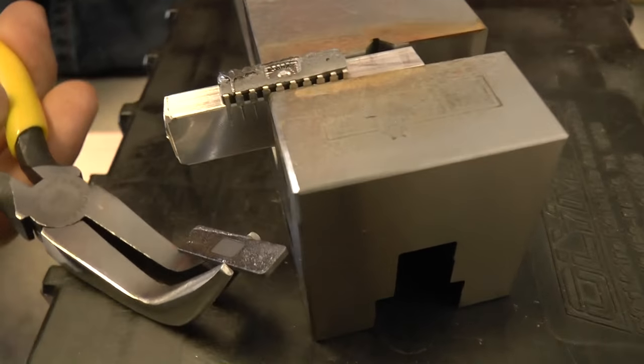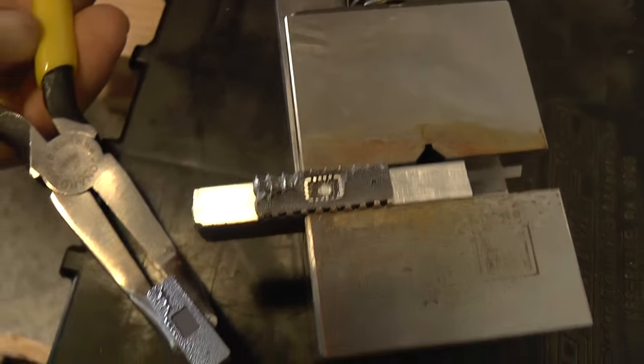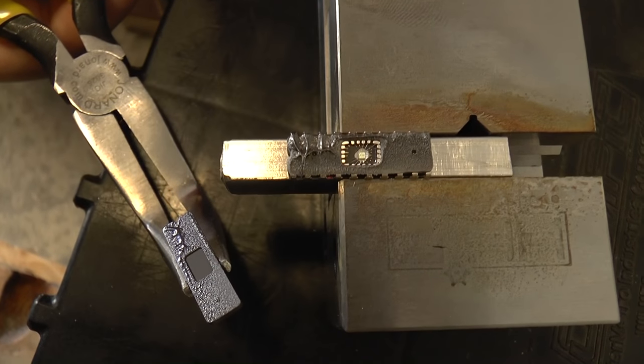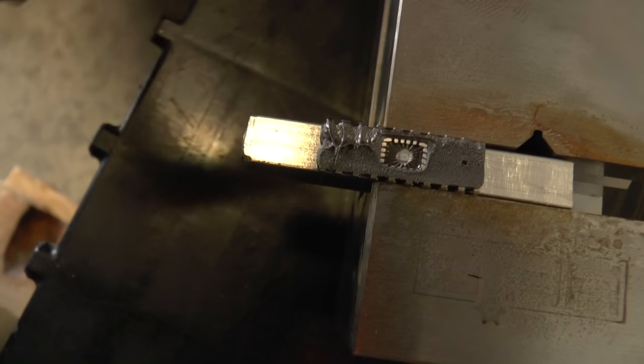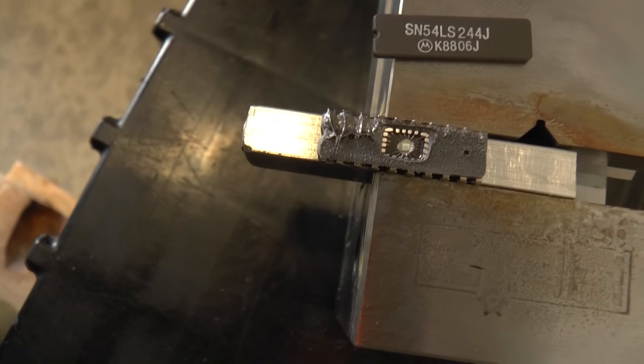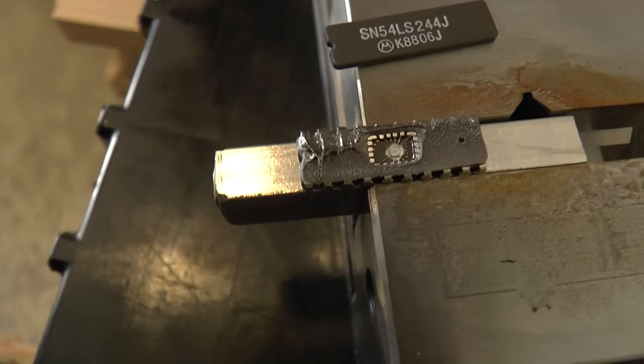And there you go. There you have it. That's the die, which you can look at under a microscope. But basically that is how you decapsulate a ceramic chip very quickly and very easily.